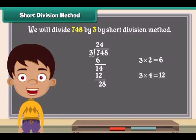Then divide 3 into 28. 3 nines are 27. 28 minus 27 is 1. Put your answer 1 as the remainder.